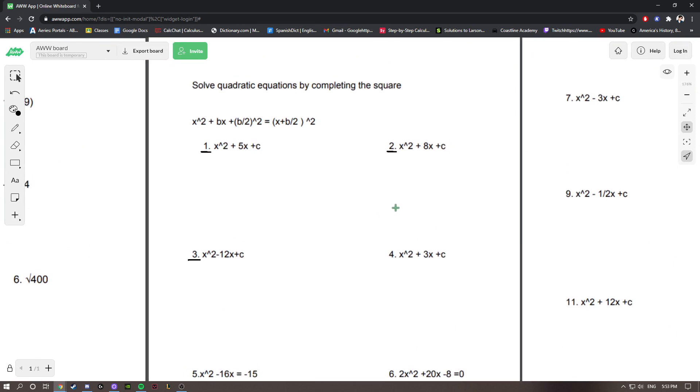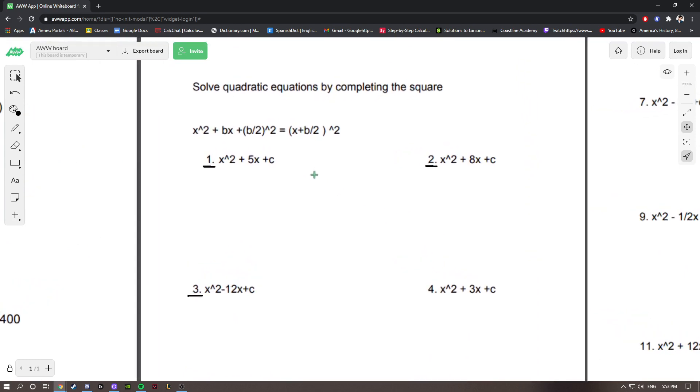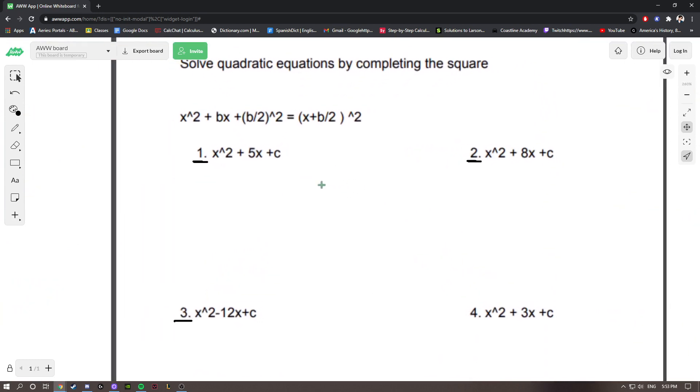Okay, page 3. Solve quadratic equations by completing the square. So, what it tells us right here in green gives us a little hint. When we look at this equation, x squared plus 5x plus c, c represents any constant.